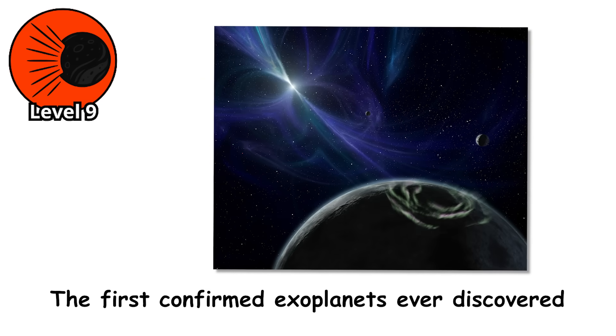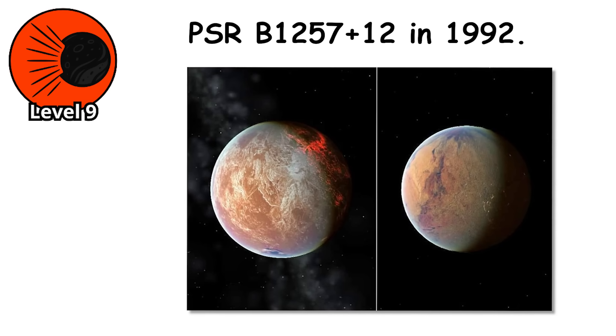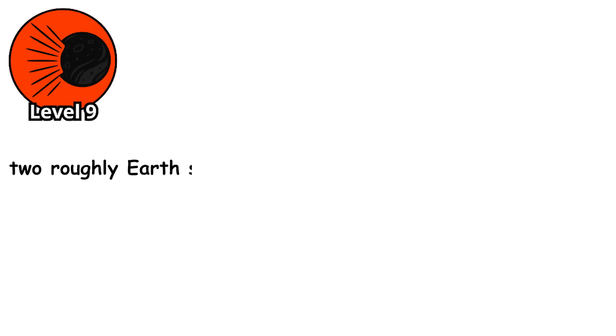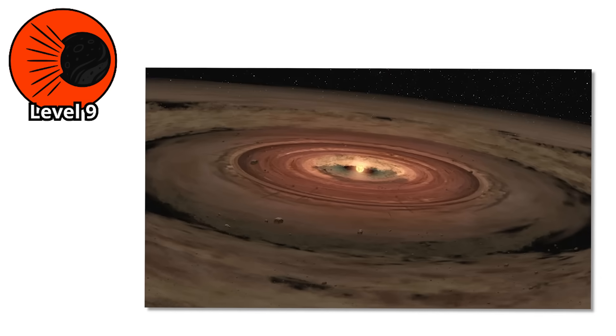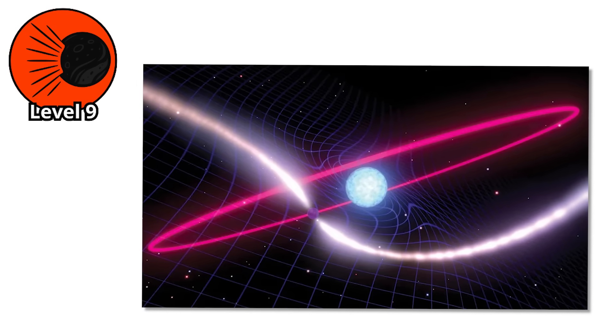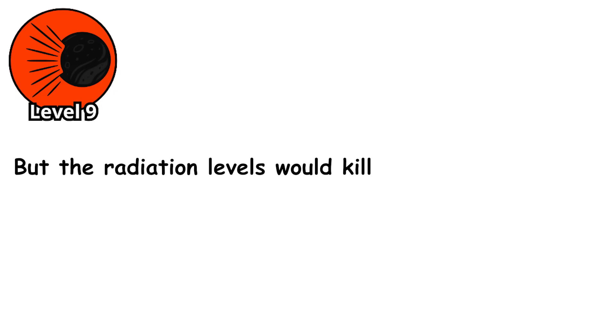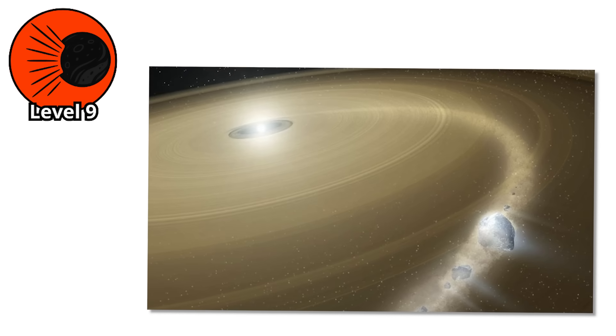The first confirmed exoplanets ever discovered were pulsar planets, orbiting PSR-B 1257+12 in 1992. There are three of them, two roughly Earth-sized and one about the mass of the Moon. They're likely made of the ashes of the supernova itself - second-generation planets formed from the debris disk after the star's death. Standing on a pulsar planet, you wouldn't see the Sun. You'd see a small, dim object, barely visible, emitting almost no visible light. But the radiation levels would kill you in microseconds. These are planets in name only, hellscapes orbiting a cosmic graveyard.